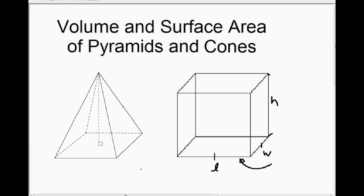It turns out there's a relationship between the volume of a pyramid and a cube. I'm only talking about a square-based pyramid here, just like in the previous video where we talked about the Pythagorean theorem on pyramids. We're only talking about square-based pyramids here, so the bottom of the pyramid is a square. If you had the same square on the bottom of this pyramid as on the bottom of this cube...